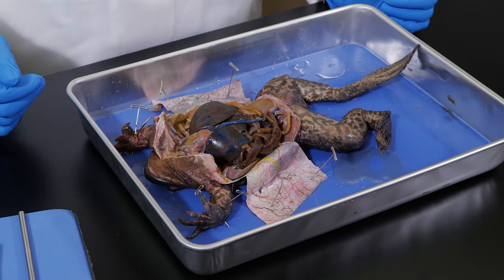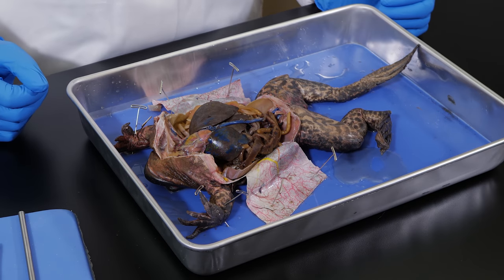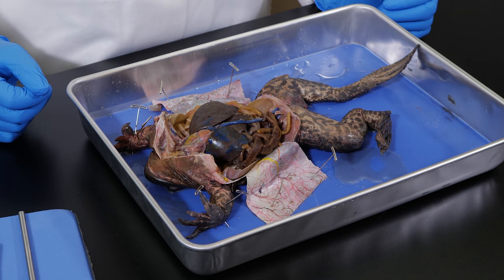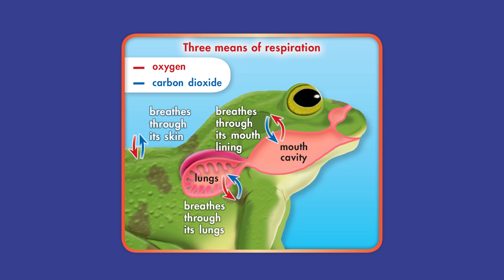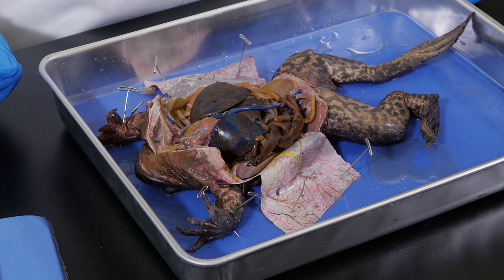All animals take in oxygen and give off carbon dioxide through the process of respiration. The frog has three means of respiration: through its skin, through the lining of its mouth cavity, and through its lungs. Since a frog does not rely entirely on its lungs for respiration, its lungs are relatively small.